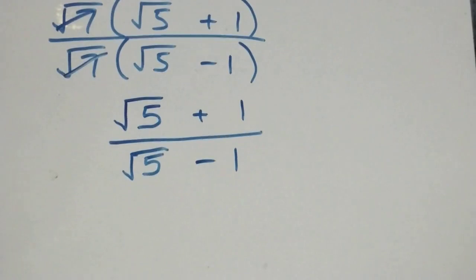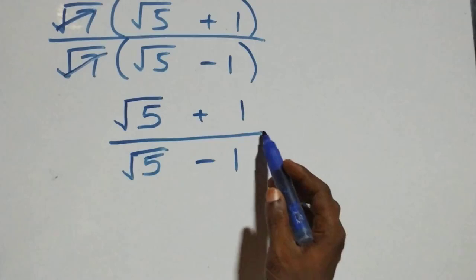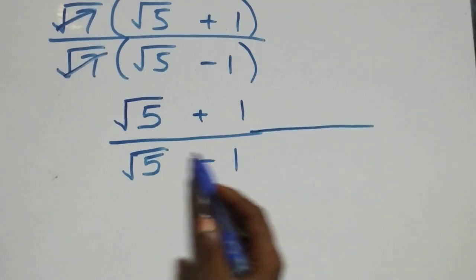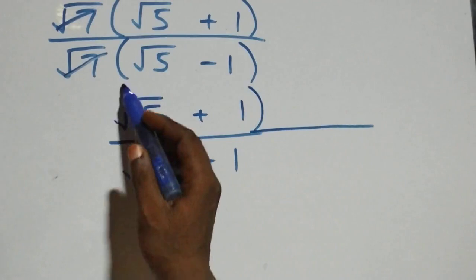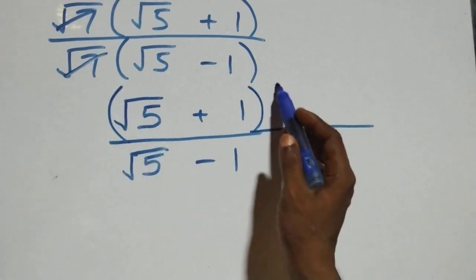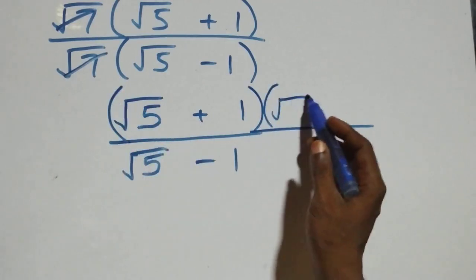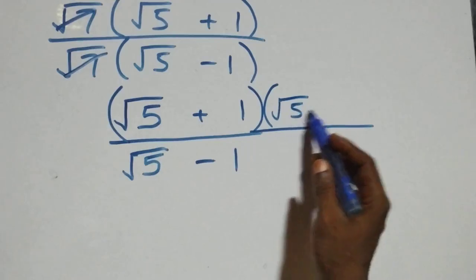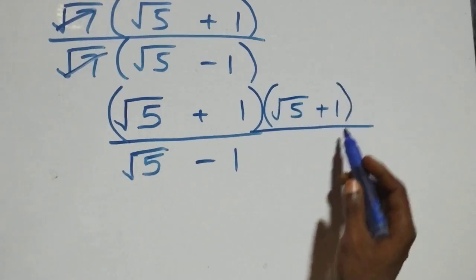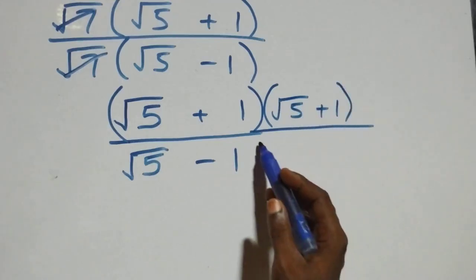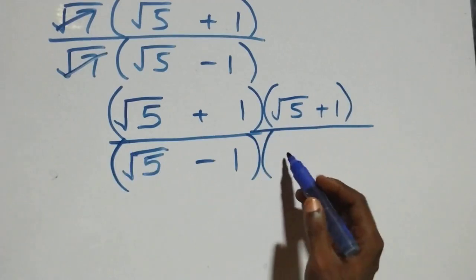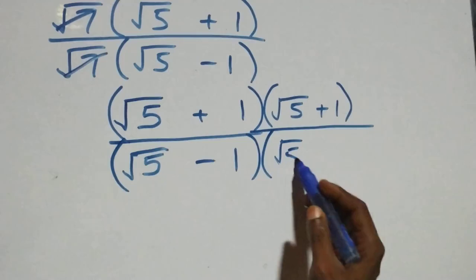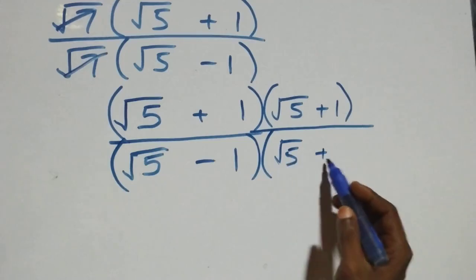Then next step here, we rationalize this and multiply by the conjugate of the denominator. We multiply this by (root five plus one), which is the conjugate here, and also multiply the denominator by the same conjugate, which is root five plus one.